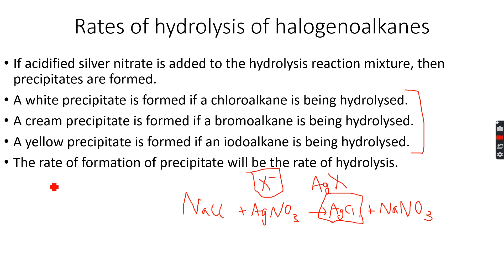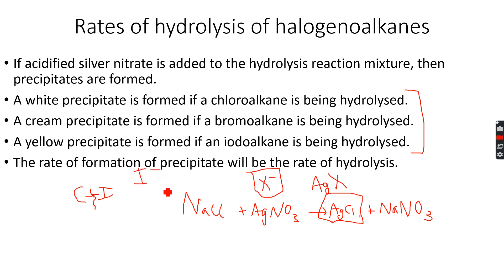Iodoalkanes hydrolyze the fastest because the C-I bond is the weakest. Since the C-I bond is the weakest, it is very easy to break. Because it is very easy to break, I⁻ ions are produced very readily, and because I⁻ ions are produced very readily, the yellow AgI precipitate is produced very readily.